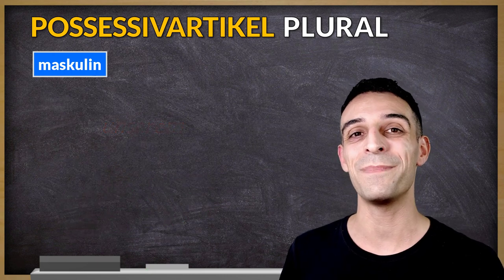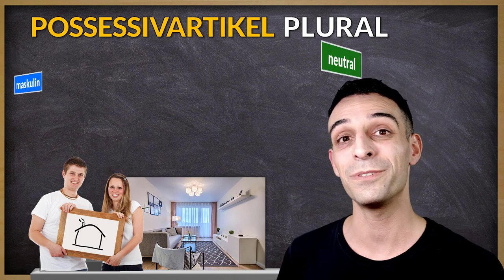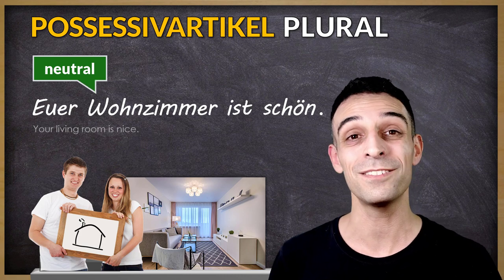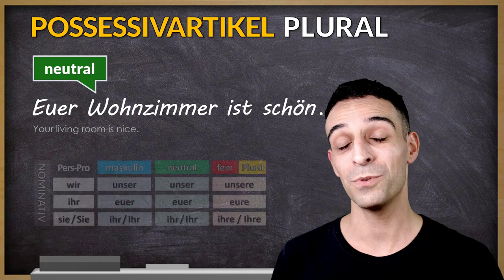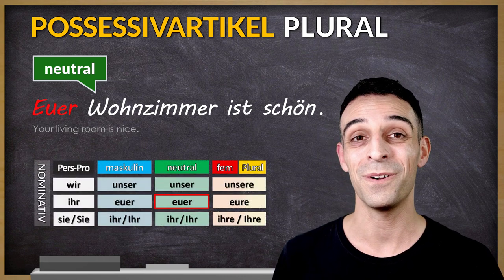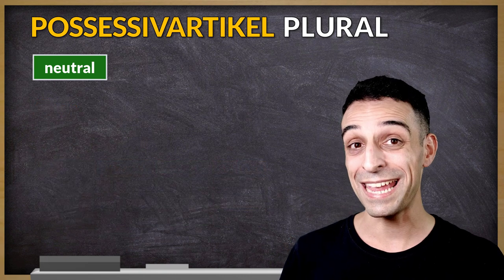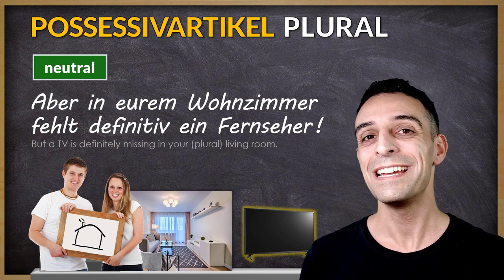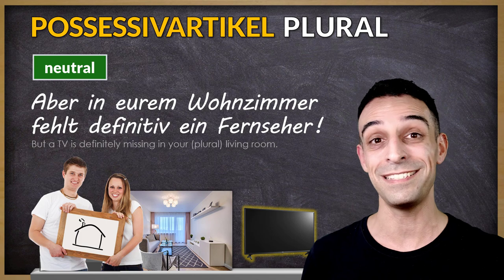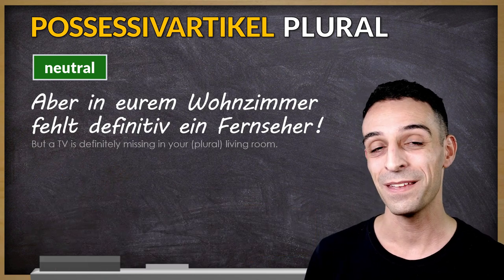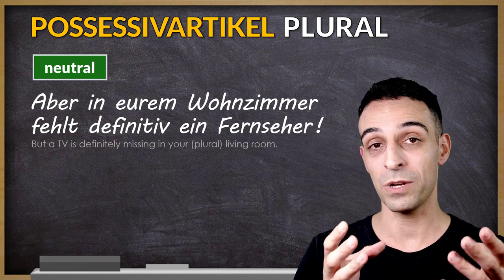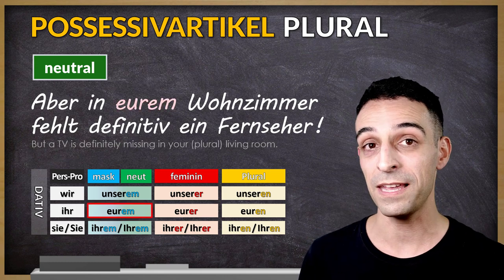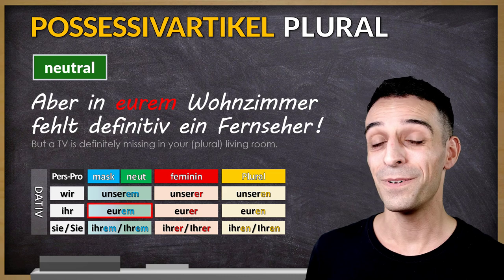In my next example, I'm in a conversation with my friends, and I use a neutral noun. Euer Wohnzimmer ist schön. Wohnzimmer, das Wohnzimmer, is the subject, nominative case: euer. Aber in eurem Wohnzimmer fehlt definitiv ein Fernseher. Now Wohnzimmer is a location and there is no movement, so I have to use dative case: eurem.